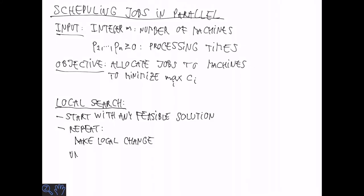Then we repeat a local change. In this case, move one job to another machine in order to improve makespan, until it's no longer possible to improve by making a local change.